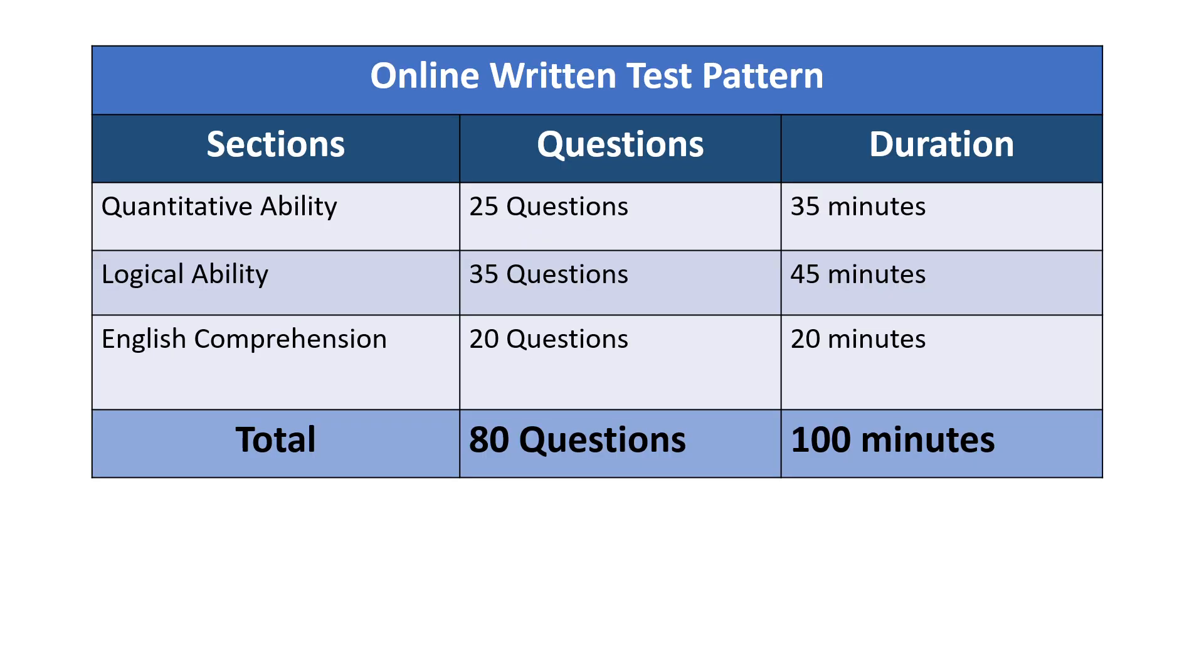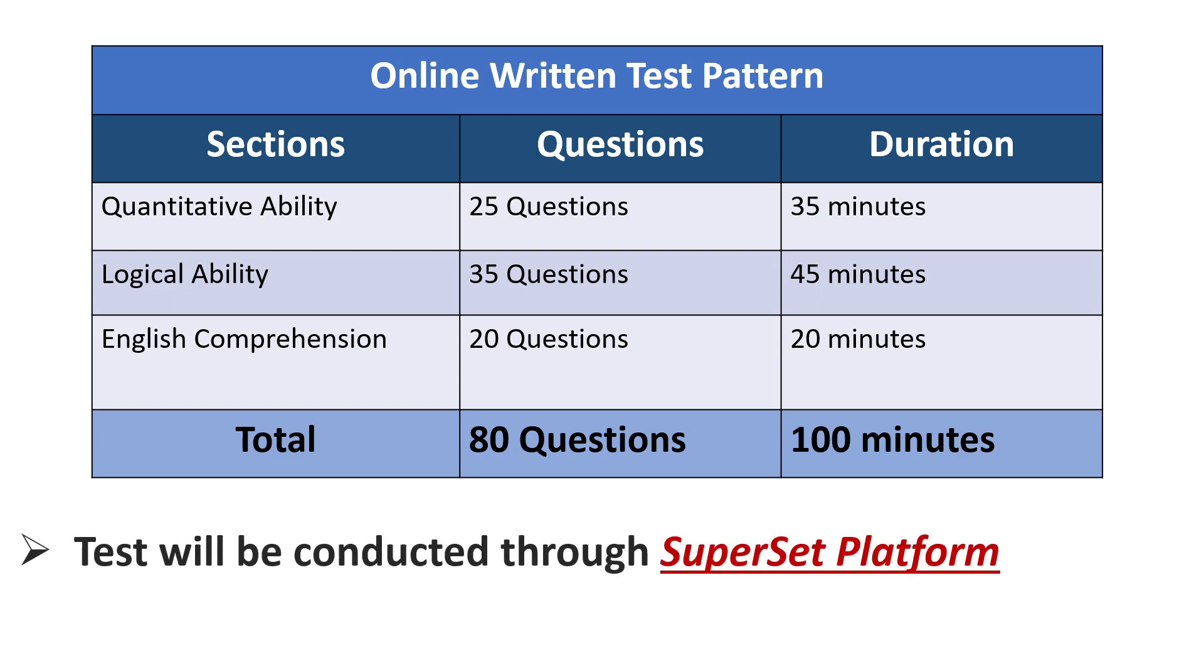So guys, this is the test pattern for the online written test. There you will find three sections which is quantitative ability, logical ability and English comprehension. In quantitative ability you have to solve 25 questions in 35 minutes. In logical ability there will be 35 questions that you have to solve in 45 minutes. And the last one is English comprehension where you will find 20 questions that you have to solve in 20 minutes. So there will be total 80 questions that you have to solve in 100 minutes. And one more important point that this online written test will be conducted through the superset platform.